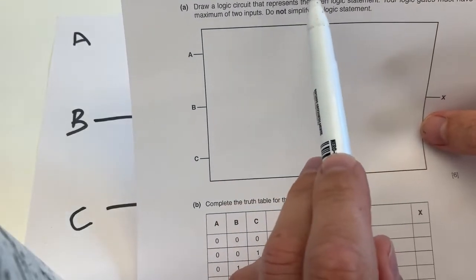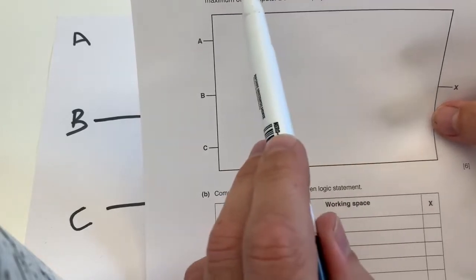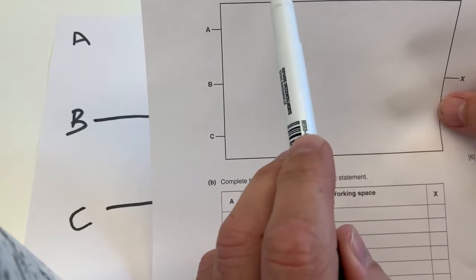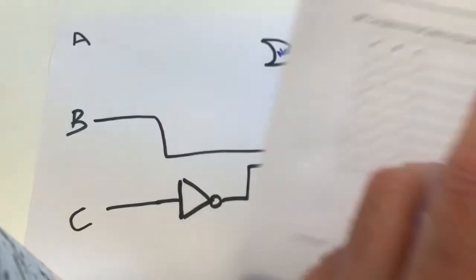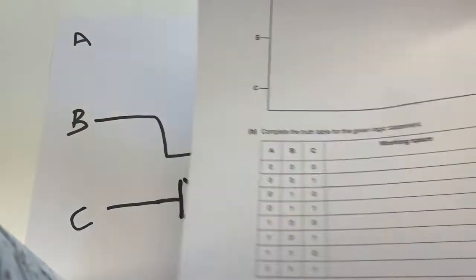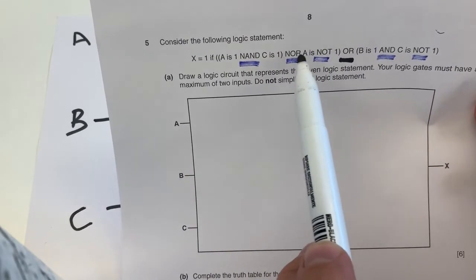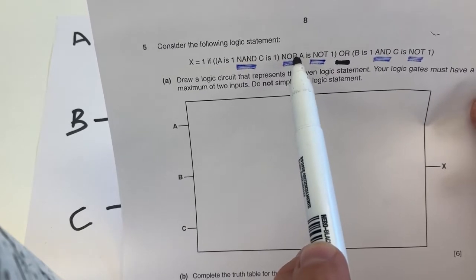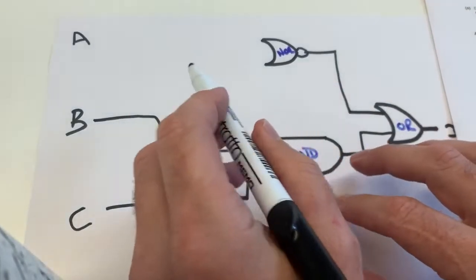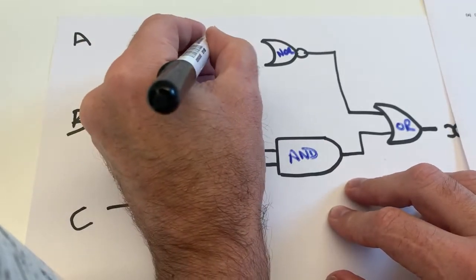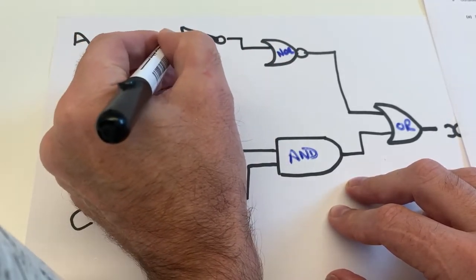Going into the NOR gate we've got NOT A - A is not one - going into the NOR gate, and on the other input we've got A is one NAND C is one. I'm going to put NOT A in first - exactly the same as I did with C. It's very much like NOT C into the AND gate - a mirror image of the bottom. So I put a NOT gate up here, and that goes from A into my NOR gate.